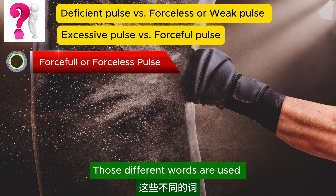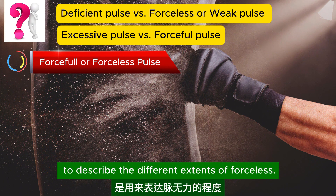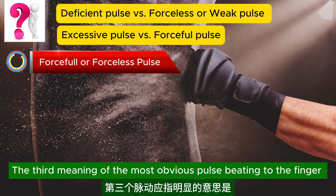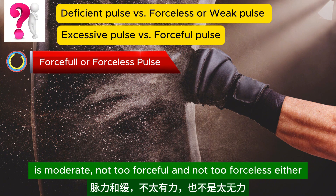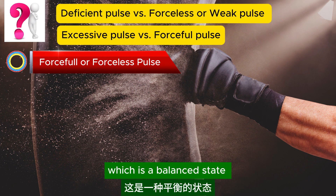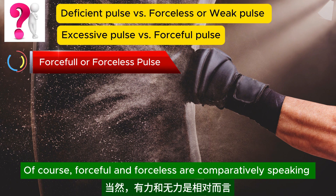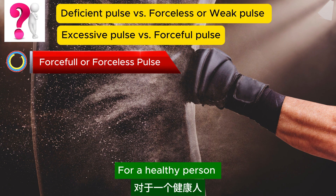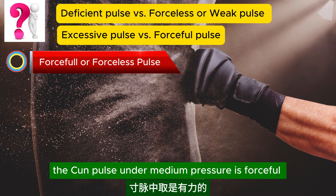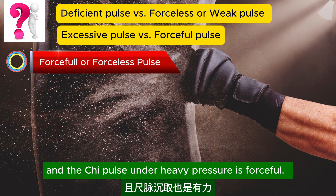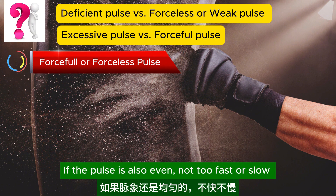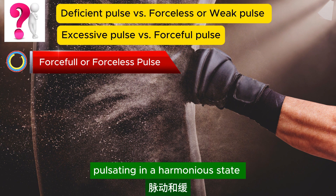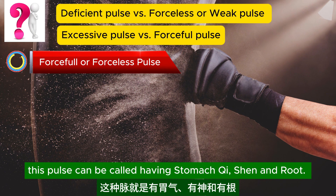Those different words describe different extents of forcelessness. Third, the most obvious pulse beating to the finger is moderate — not too forceful and not too forceless, a balanced state. Forceful and forceless are comparatively speaking when compared to a healthy person's pulse strength. For a healthy person, the cun pulse under medium pressure is forceful, and the chi pulse under heavy pressure is forceful. If the pulse is also even, not too fast or slow, pulsating in a harmonious state, this pulse can be called having stomach qi, shen, and root.